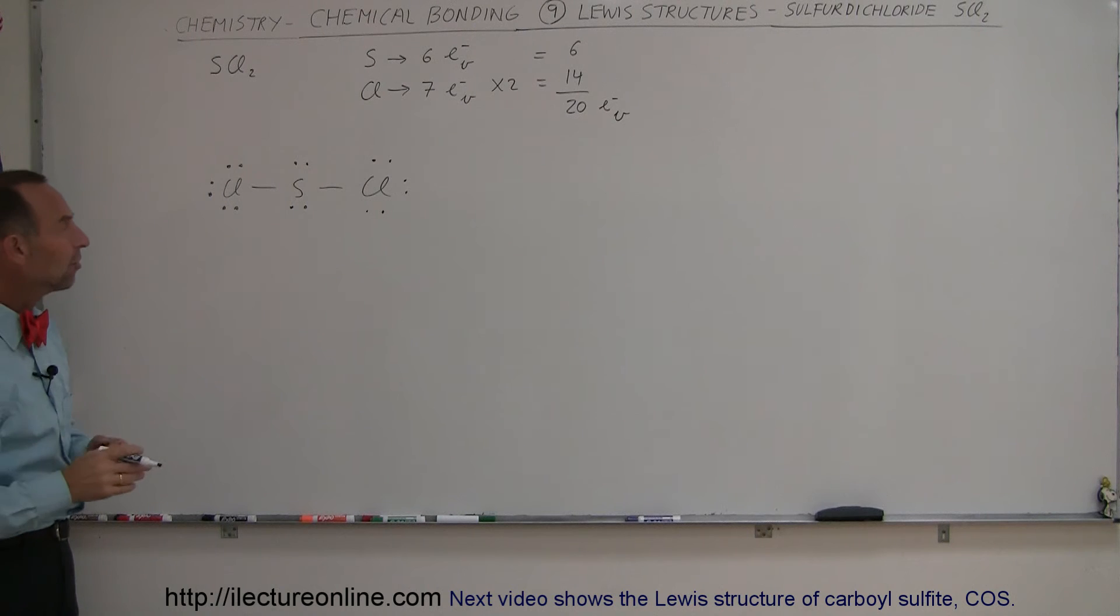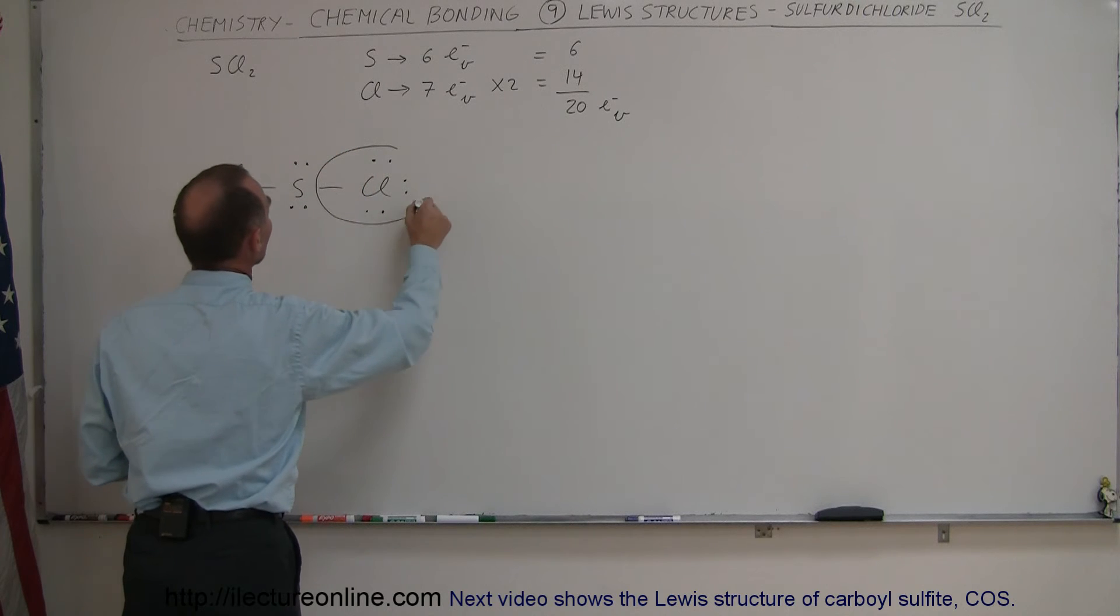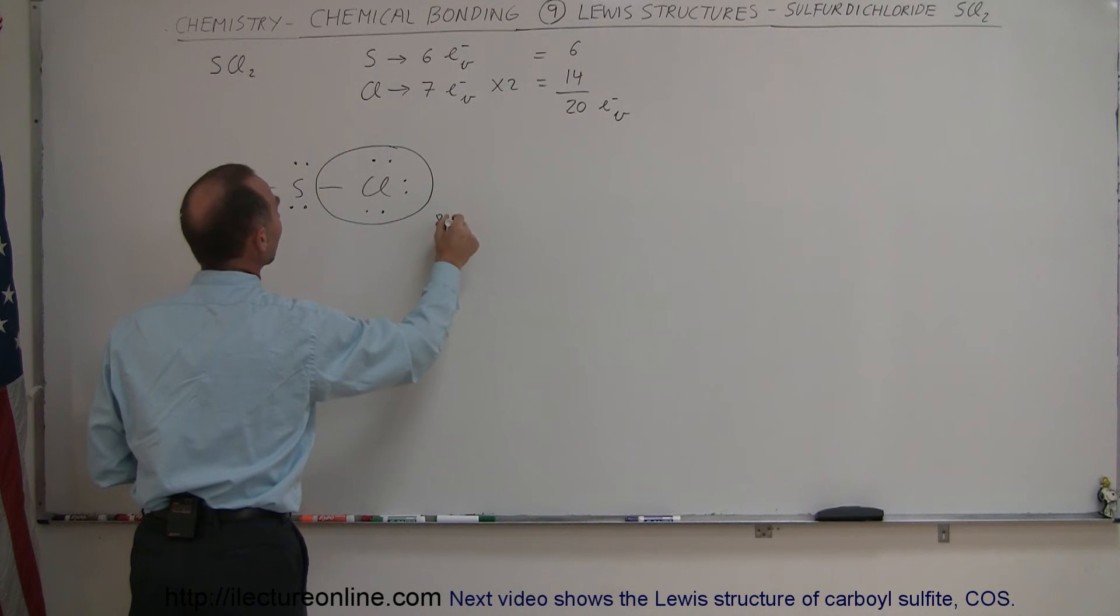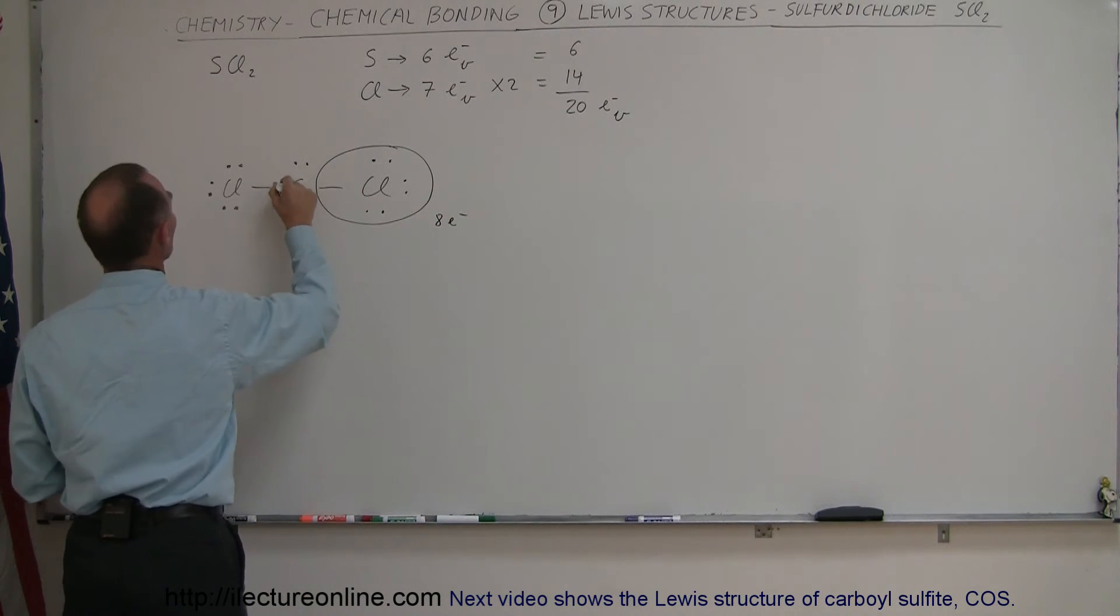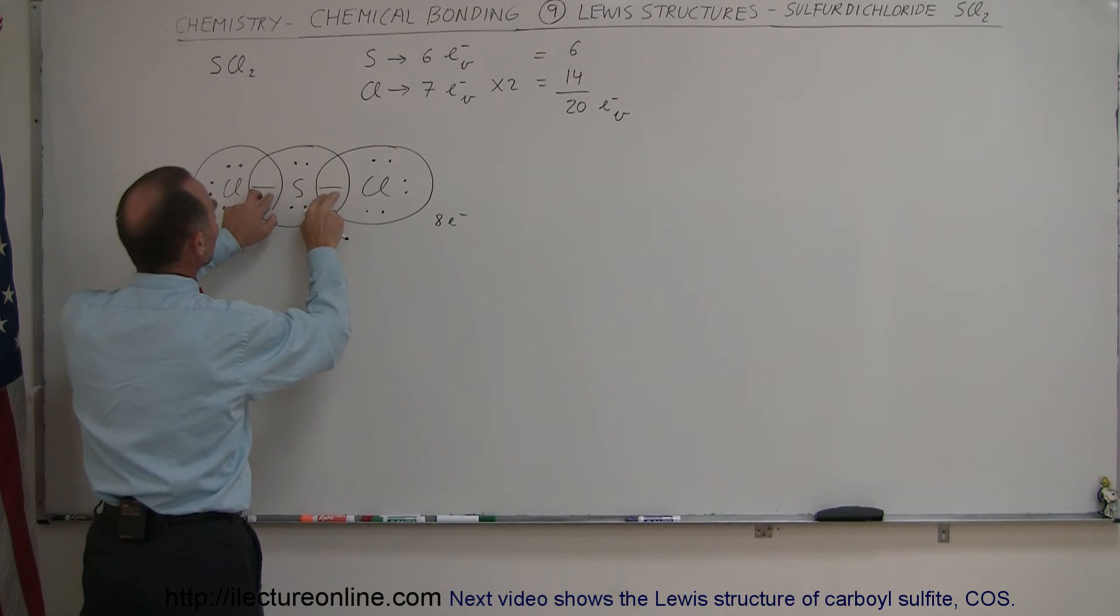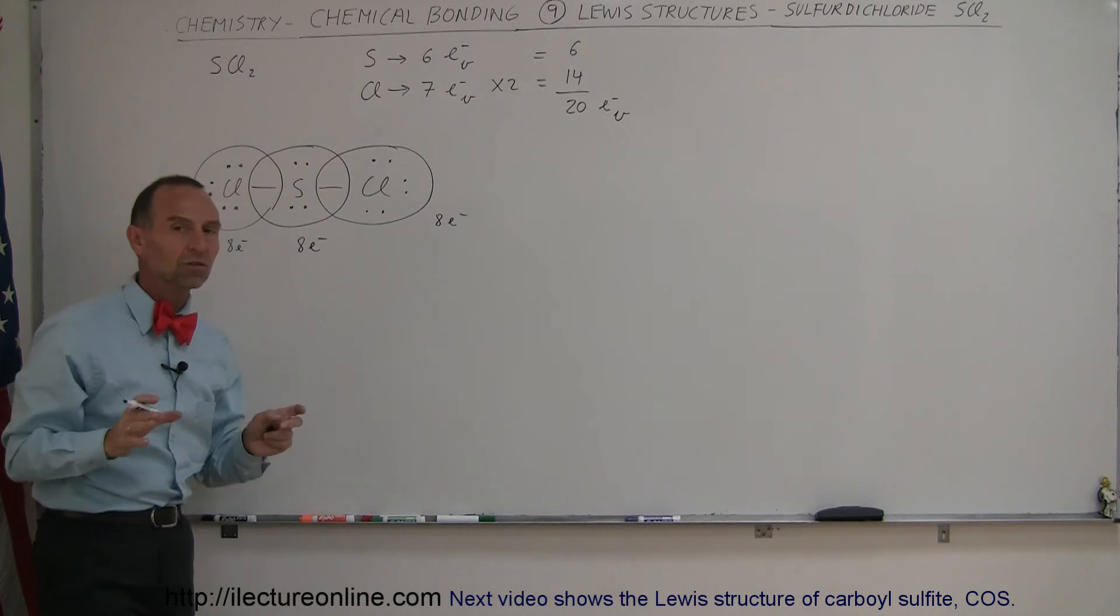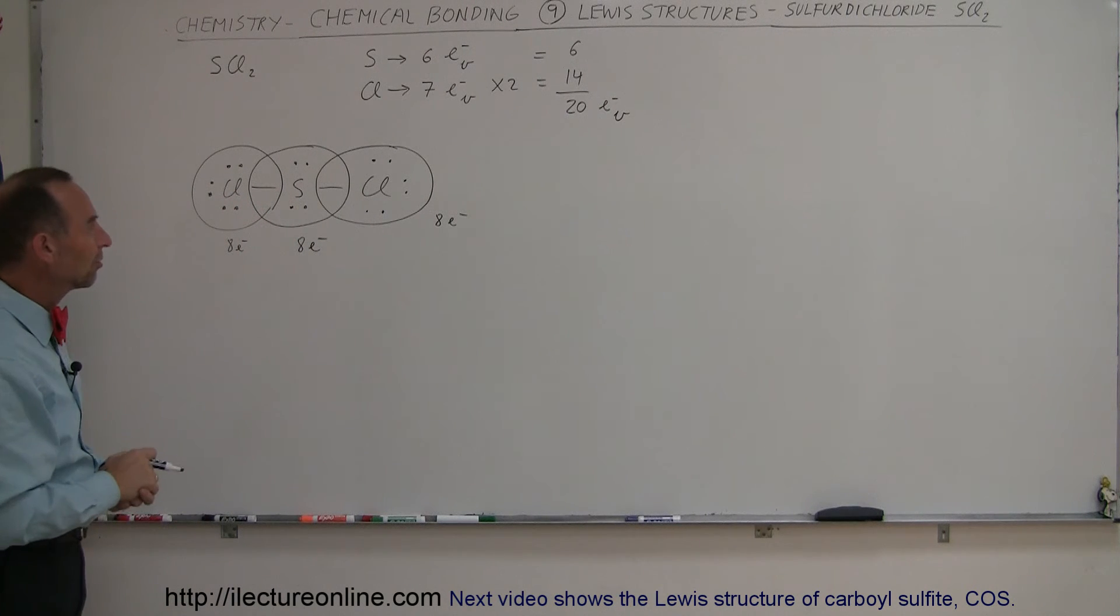Now we're going to do a few tests. Do we have the octet rule satisfied? Notice that chlorine part of the time will have eight valence electrons, this chlorine part of the time will have eight valence electrons, and this sulfur, having four of its own electrons and then sharing these two on either side, would also have eight valence electrons. The octet rule is satisfied.